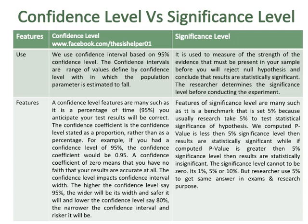Features of significance level are many, such as it is a benchmark set at 5% because usually researchers use 5% to test the statistical significance of a hypothesis. If the computed p-value is less than the 5% significance level, then results are statistically significant. The significance level cannot be 0; it is 1% or 5%, but researchers commonly use 5% for consistency in exams and research.